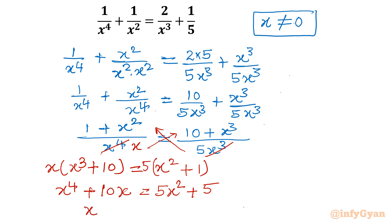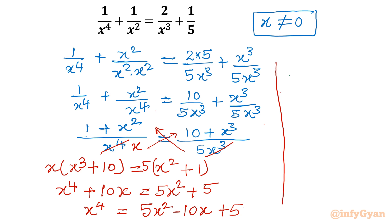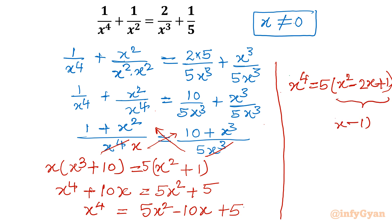Now I can see I can take something common from the right-hand side. If I take 5 common from the RHS, what will be left is x² − 2x + 1. So: x⁴ = 5(x² − 2x + 1). And what is x² − 2x + 1? This is (x − 1)². So our equation converts into x⁴ = 5(x − 1)².